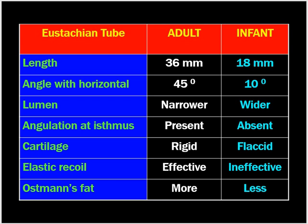All these above-mentioned features make the Eustachian tube of children more vulnerable to infection spreading from the nose or nasopharynx to the ear. Therefore, in young children, frequent common colds might lead to ear infections or formation of fluid inside the ear, that is called otitis media with effusion. This also makes the pediatric ear more vulnerable to infections from the nasopharynx, which are also more common in children.